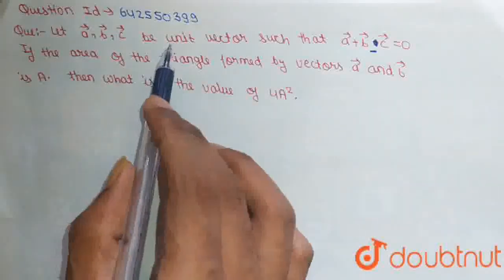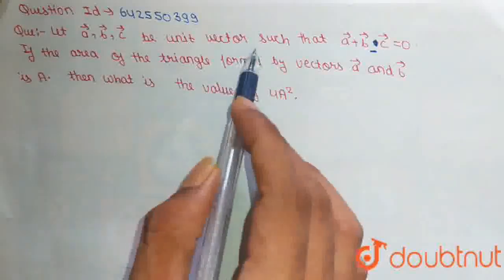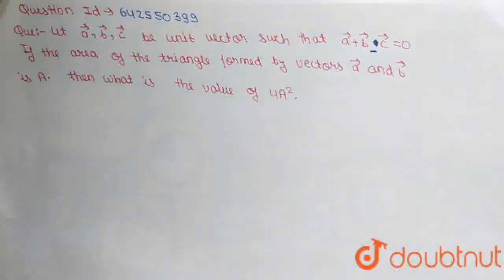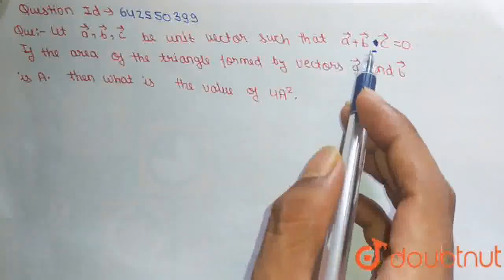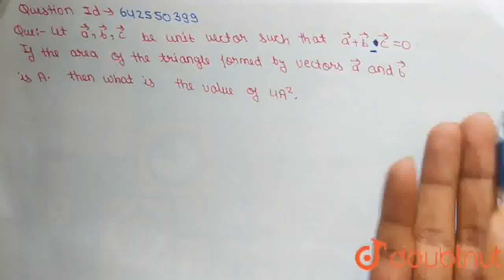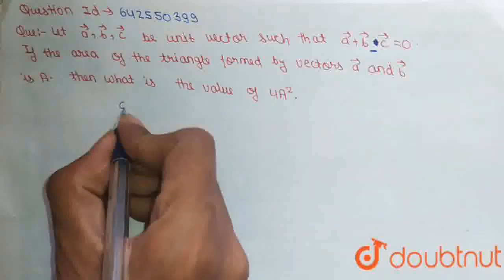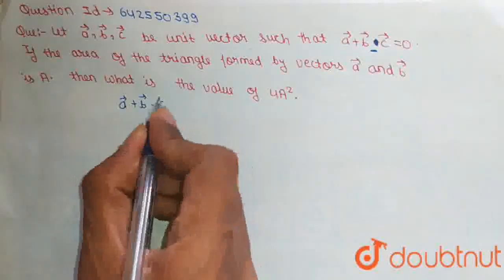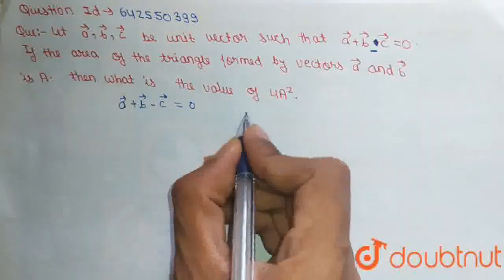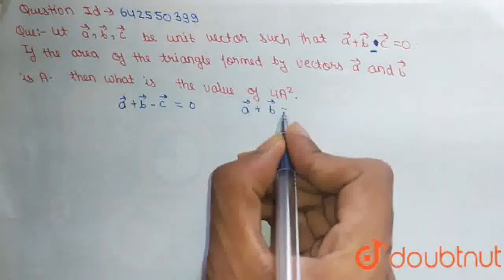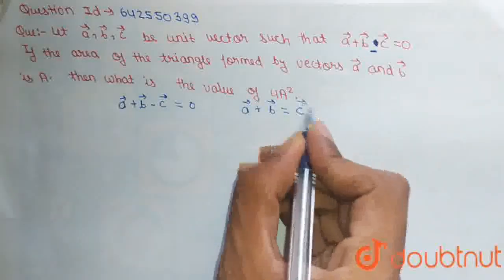For this, firstly we have to know what is a unit vector. A unit vector is a vector whose magnitude is 1. We have been given that A vector plus B vector minus C vector is equal to 0. From here we can write A vector plus B vector is equal to C vector.